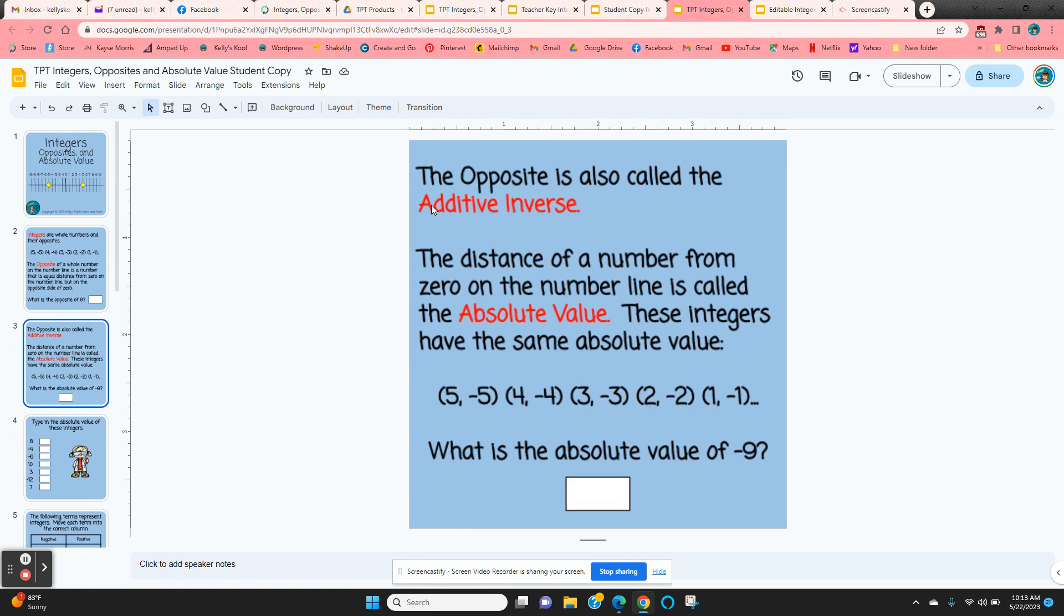Then some more definitions. Additive inverse, which is another term for opposite. And absolute value is some examples. And then it says, what's the absolute value of negative nine? They just type that in.